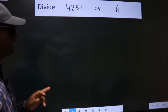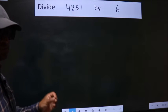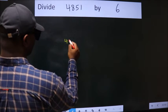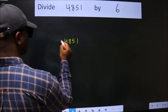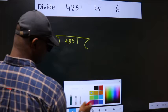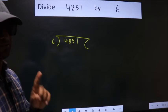Divide 4851 by 6. To do this division, we should frame it in this way: 4851 here, 6 here. This is your step 1.